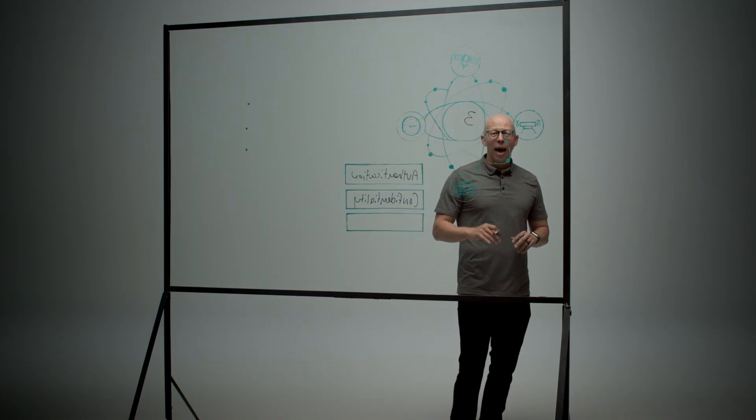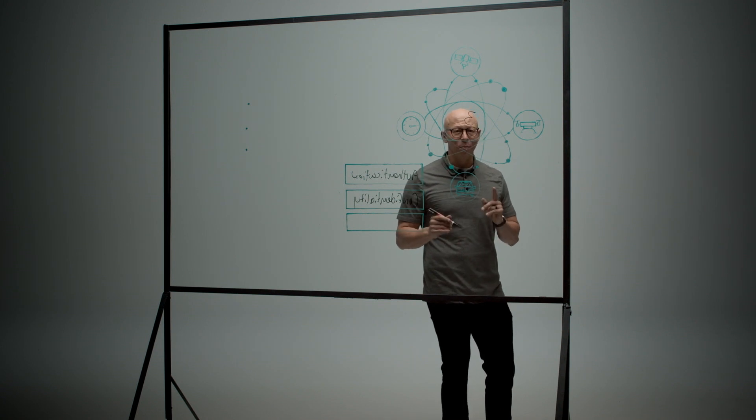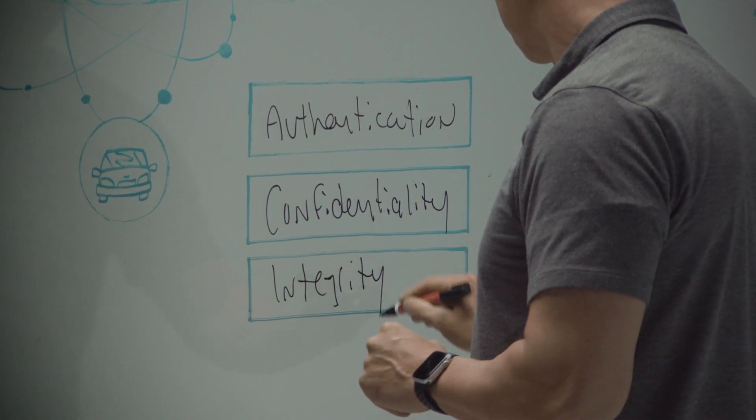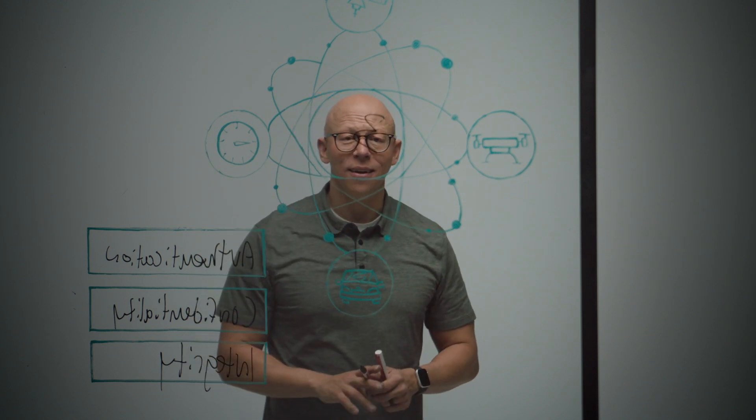And finally, how do you know that the data being generated and collected by these devices can be trusted? So integrity becomes the third common vulnerability amongst these devices. These three vulnerabilities can be seen in almost every IoT device.